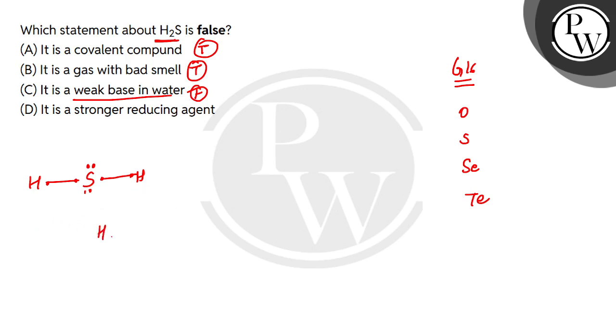Because when H2S goes into water, the proton is released. It will make HS negative and H positive release. Now, HS negative is a conjugate base, which is H2S, which is stable.